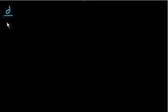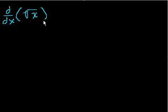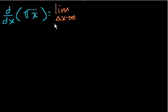We know from the definition of the derivative that the derivative of the function √x is equal to the limit as Δx approaches 0. Some people say h approaches 0 or d approaches 0; I just use Δx, the change in x, approaching 0.